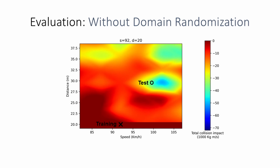The parameters varied are the initial speed and distance to the obstacle. First, we look at the baseline case without domain randomization. In the plot, the horizontal axis maps different initial speeds, and the vertical axis shows the initial distance to the obstacle. The X in the plot designates the fixed training configuration. The colors represent the impact of collision in subsequent test runs. As we can see, there are multiple configurations where the color is far from the red zero. Let us look at a video of such a test case.